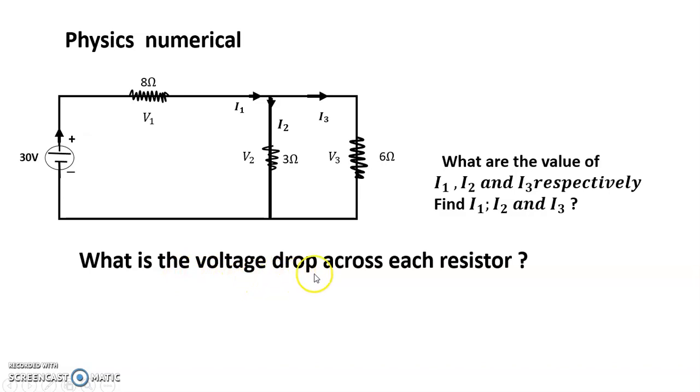And what is the voltage drop across each resistor? You will see this is the voltage, 30 volt is the potential, the electromagnetic force, you can say EMF.